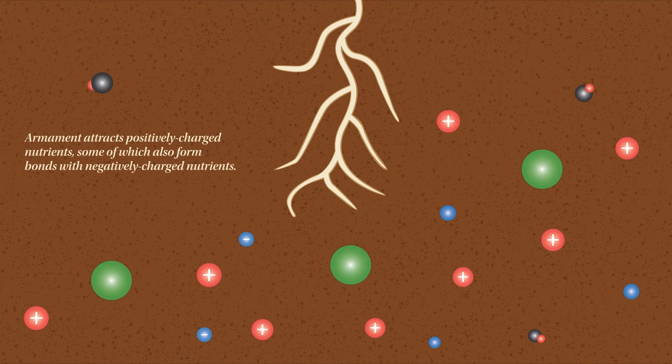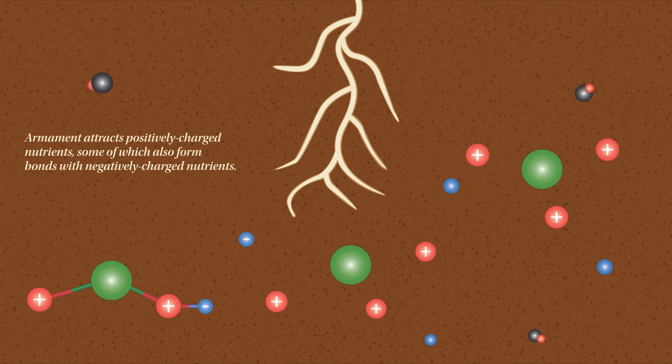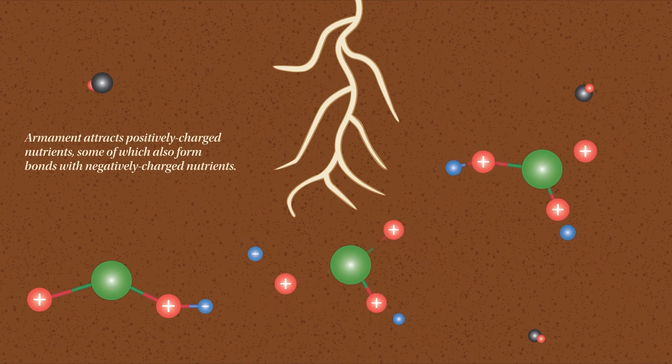Armament particles attract a bond with cationic nutrients in the soil, some of which then form bonds with anionic nutrients. Armament's strong negative charge complements naturally occurring colloids in the soil.